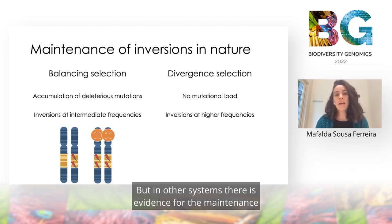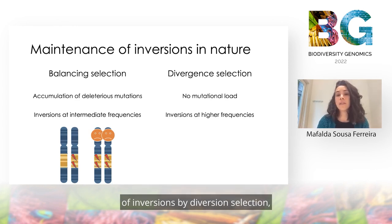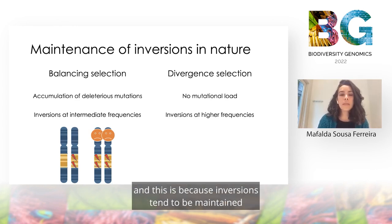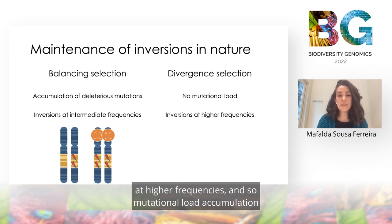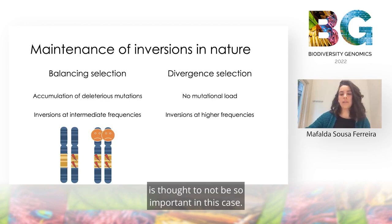In other systems, there is evidence for the maintenance of inversions by divergent selection, because inversions tend to be maintained at higher frequencies, and so mutational load accumulation is thought to not be so important in this case.